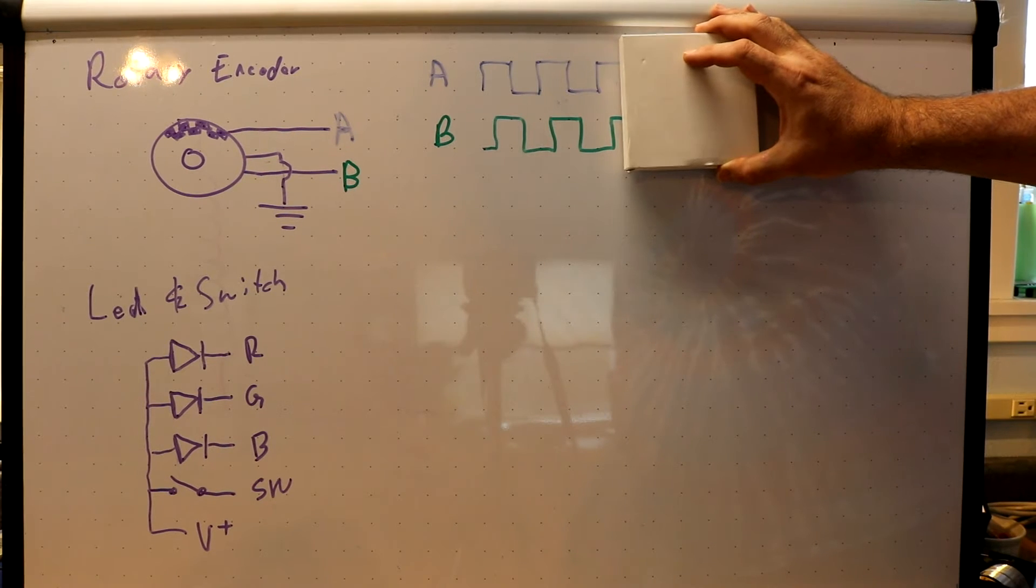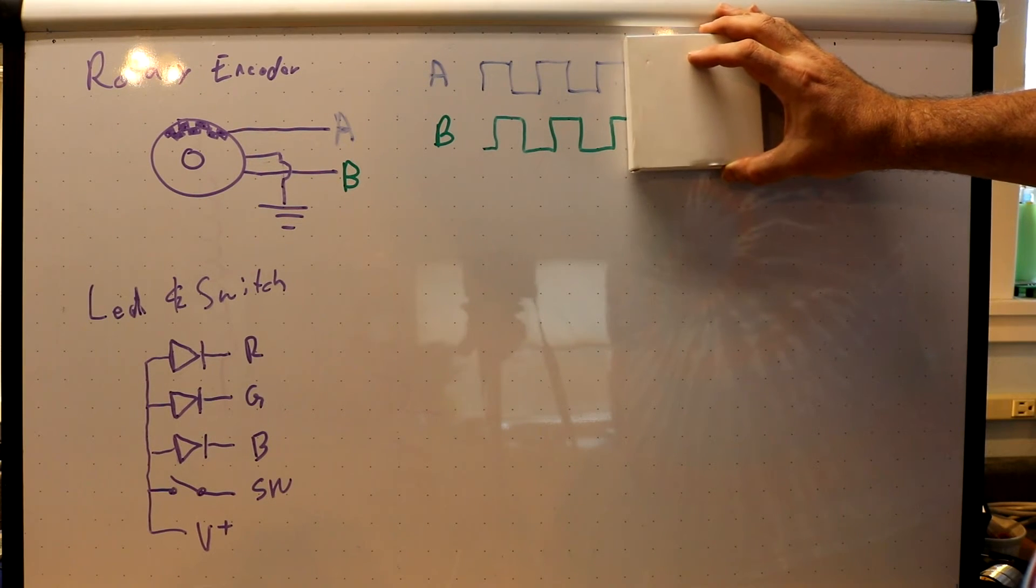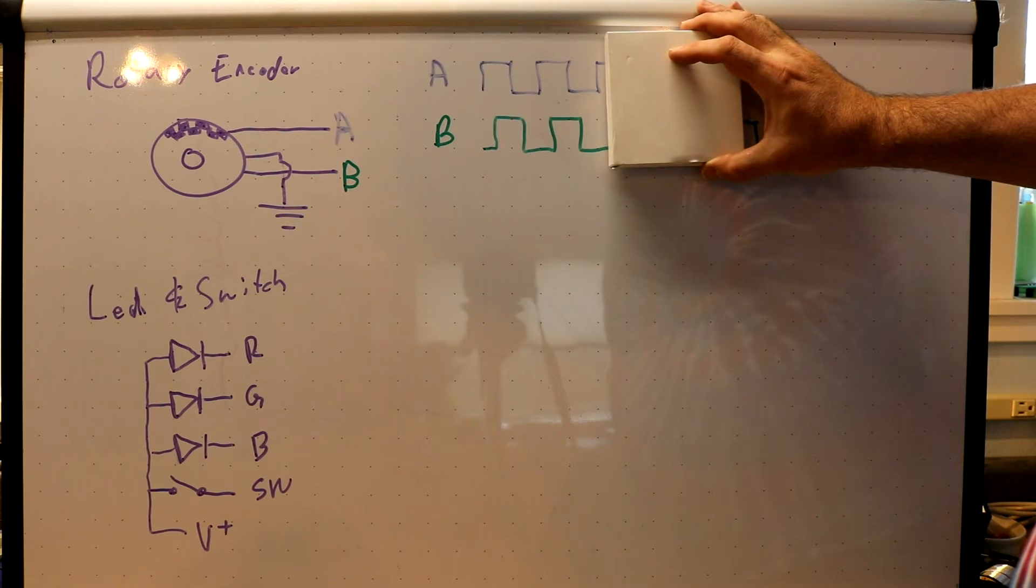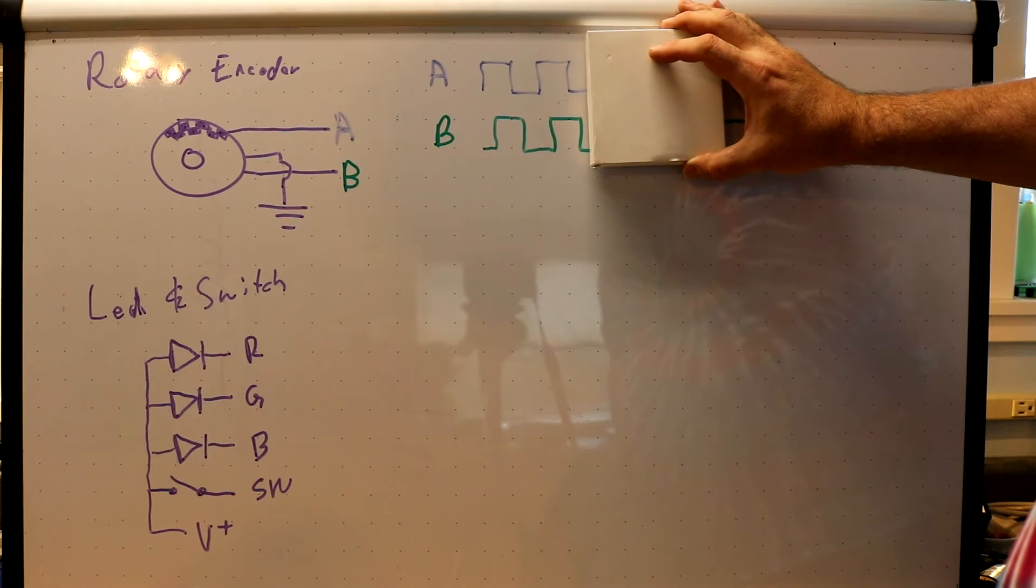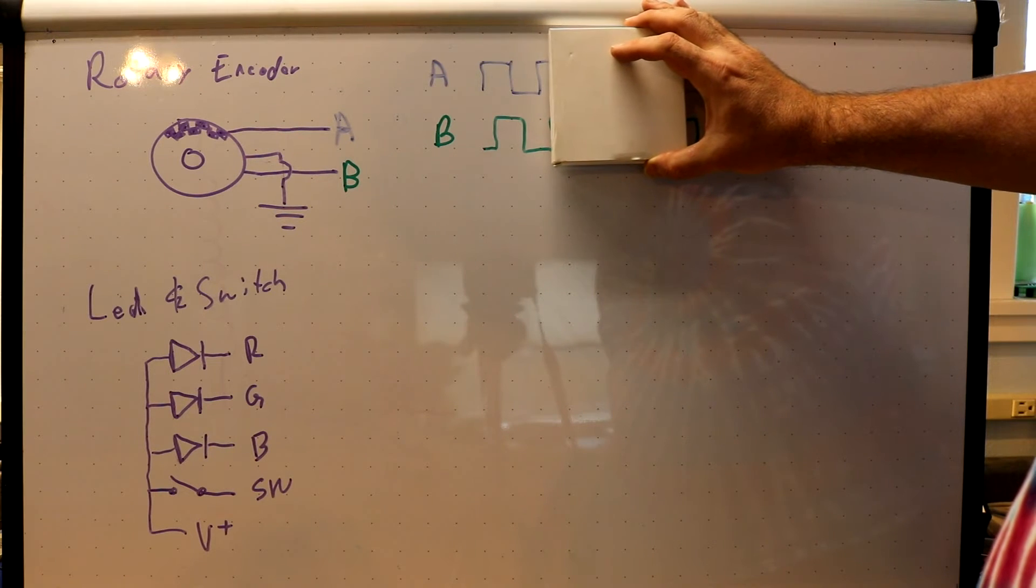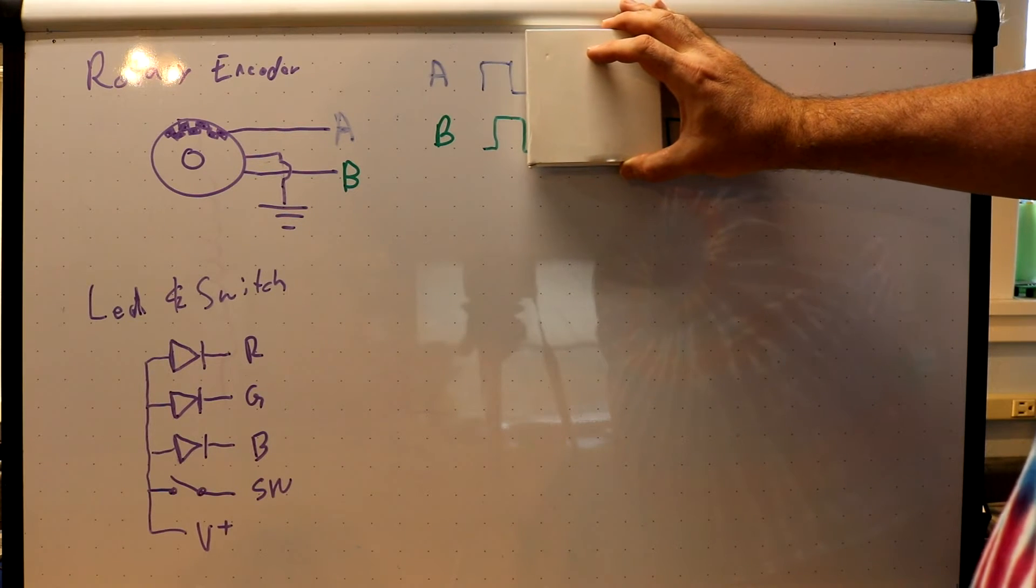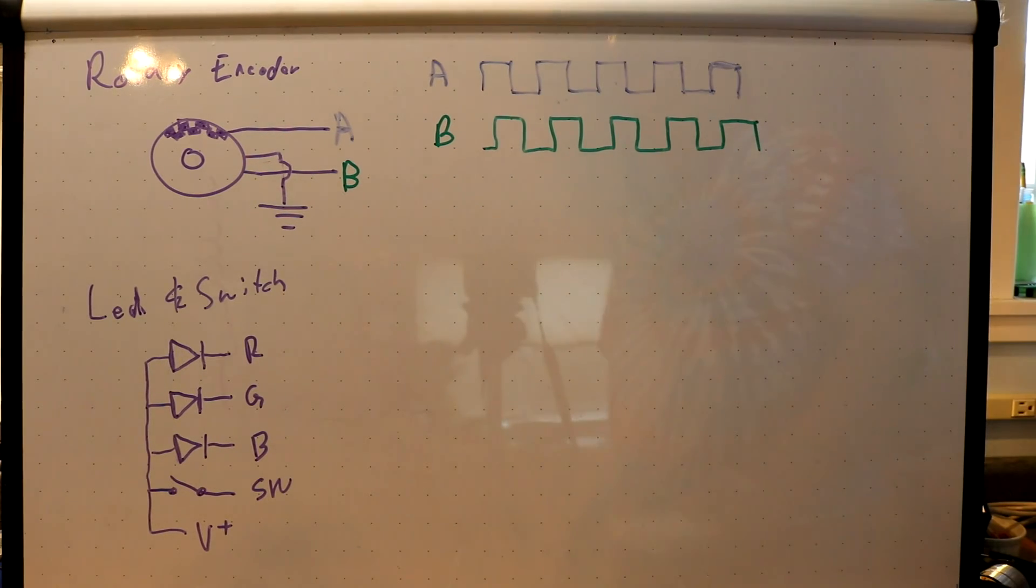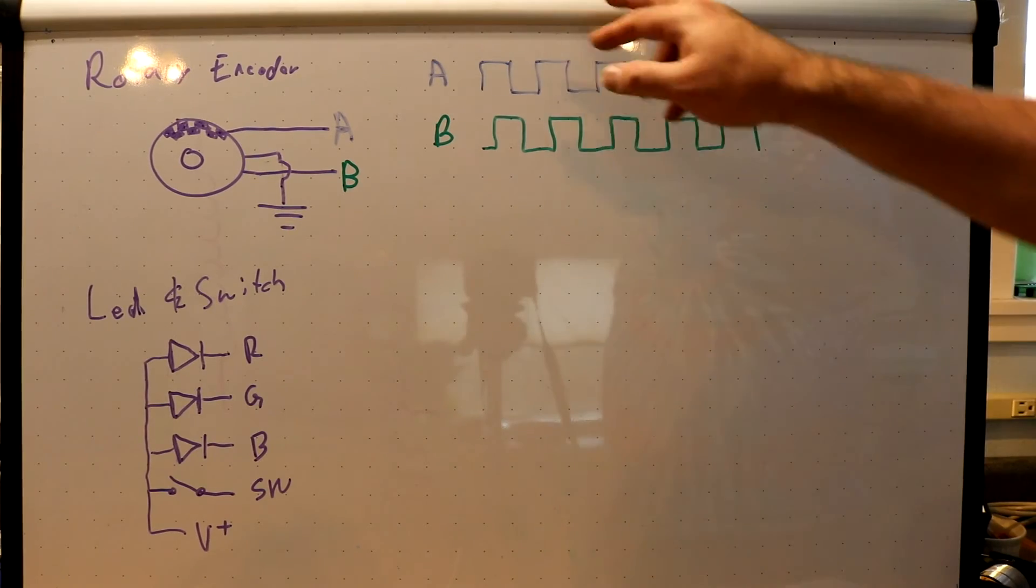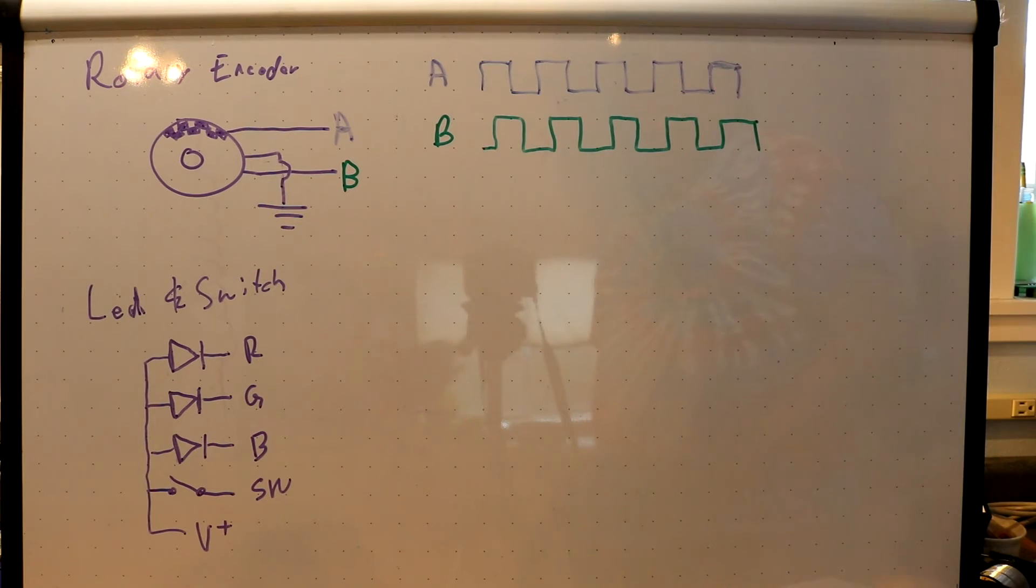If you're turning in the other direction, right now we have both A and B up, but we'll come along then B will go down, A will go down, B goes up, A goes up, B goes down, A goes down, B goes up and A goes up. So by monitoring these two lines, you can tell whether it's moving in this direction or that direction based on the stream of pulses that you get.